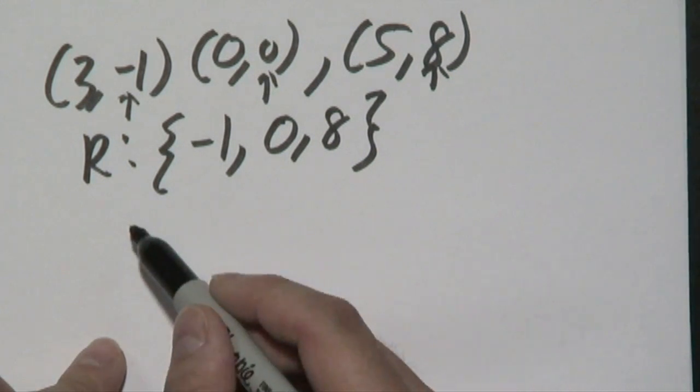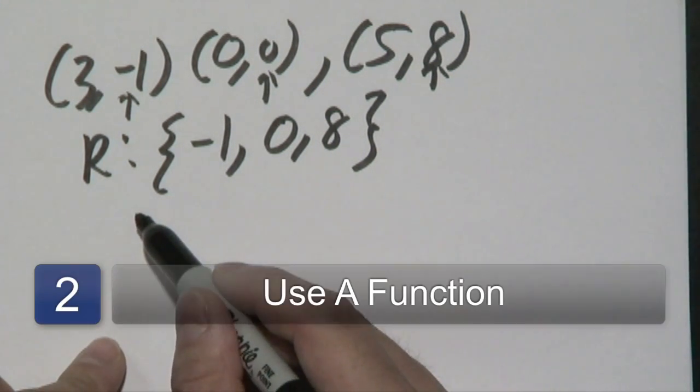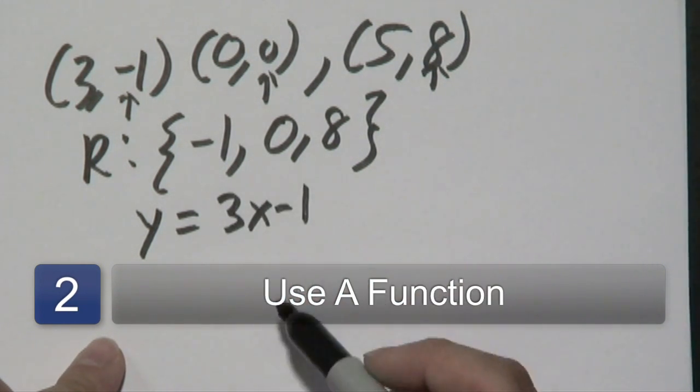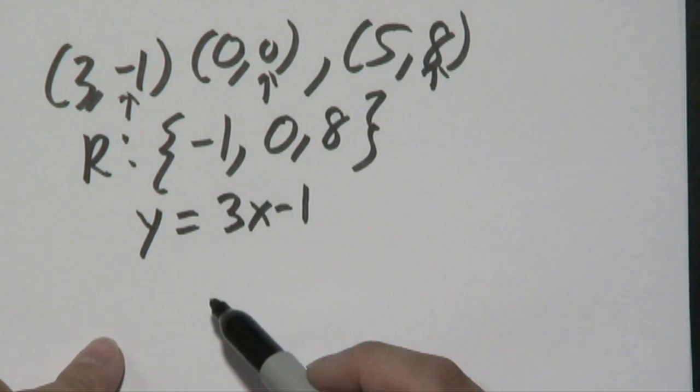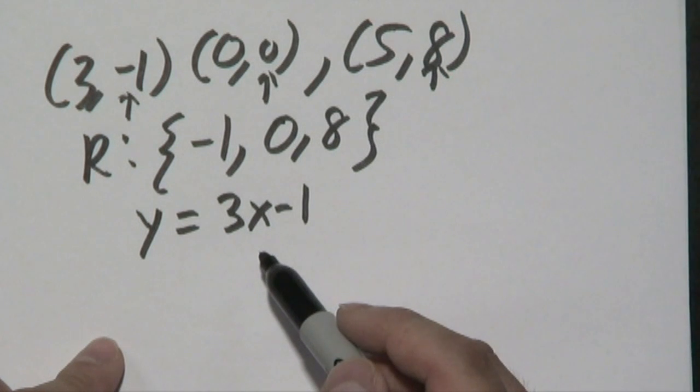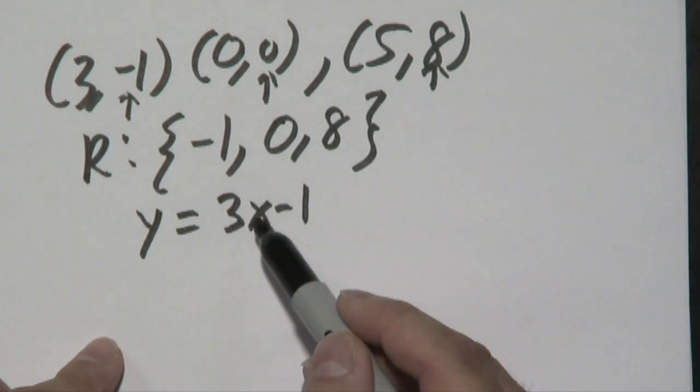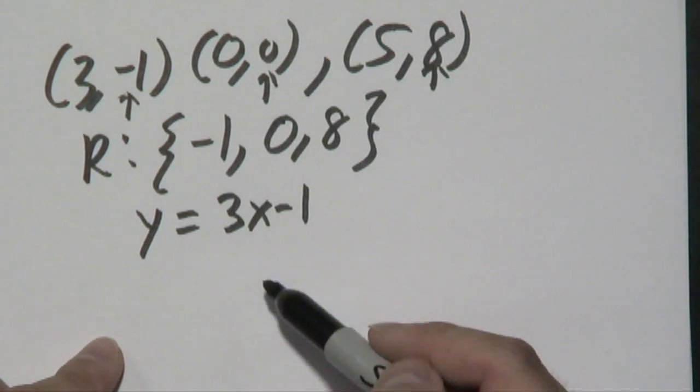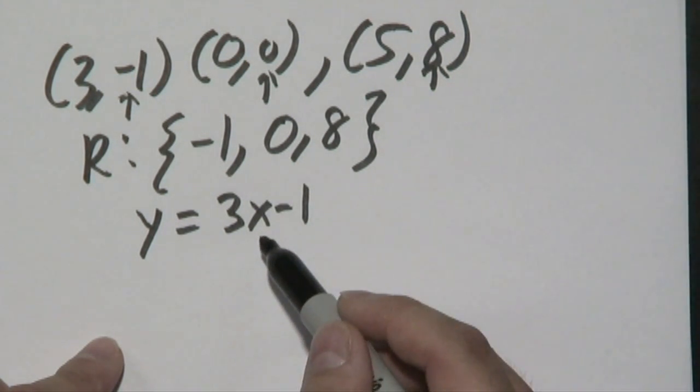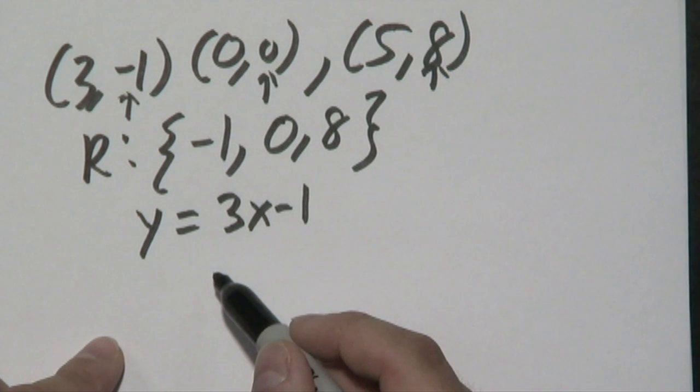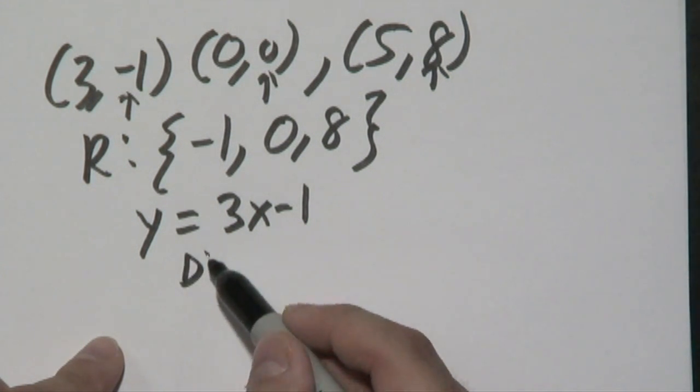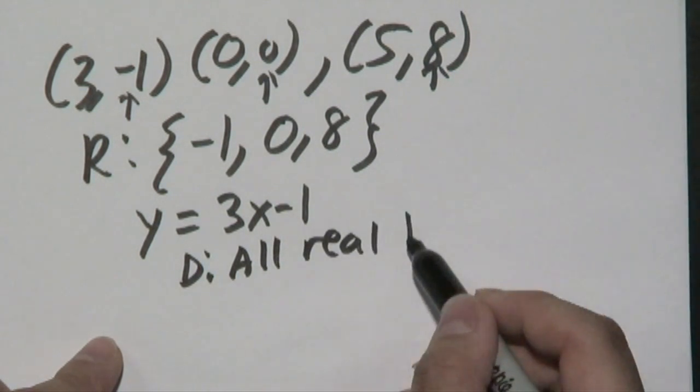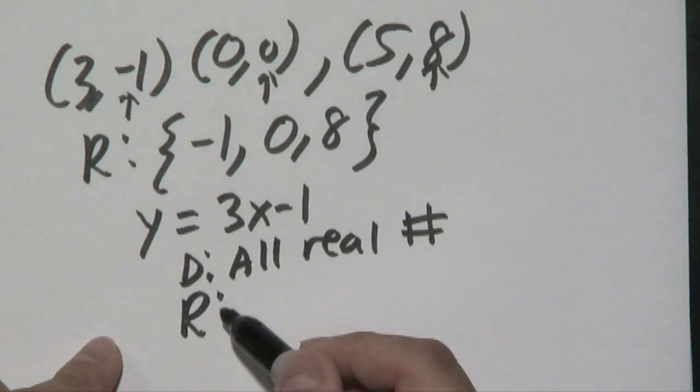Now let's do a few examples from a function perspective. Suppose you have the function Y = 3X - 1. Now in this particular case to find the range, you kind of have to look at what the domain happens to be. Now in this case you can plug in whatever number you want for X because there's no fractions or radicals or any of the strange structure that often make up functions. So you can plug in here any number you want for X, which means that your domain is all real numbers.